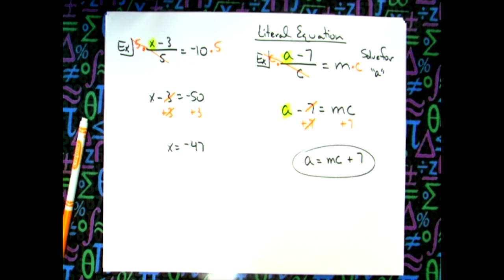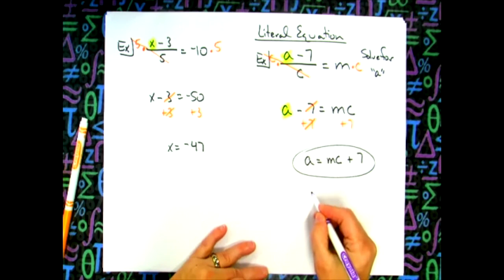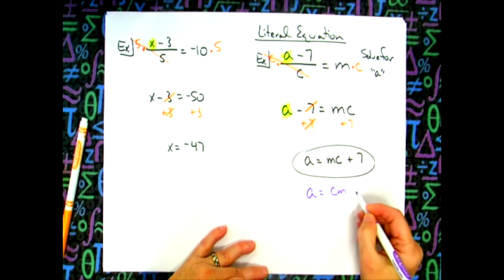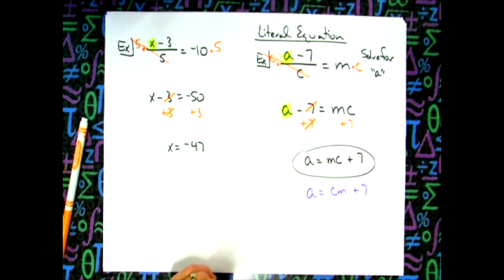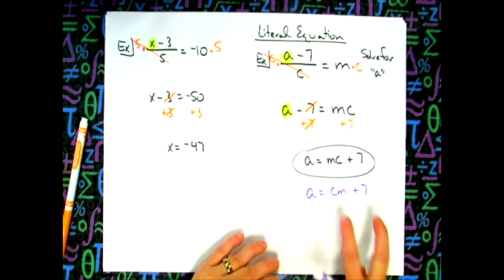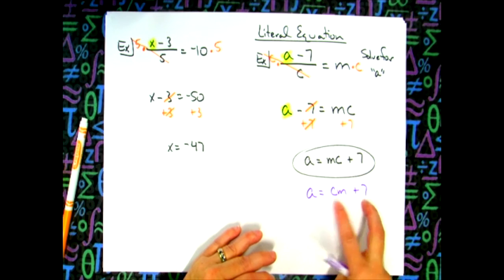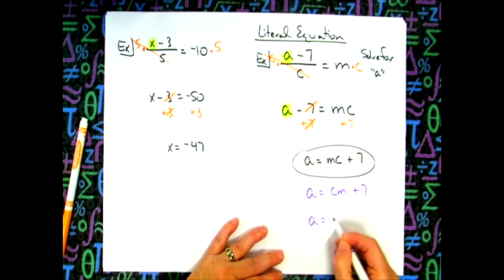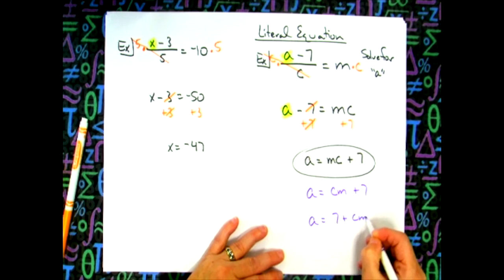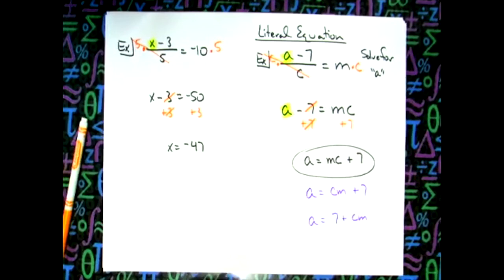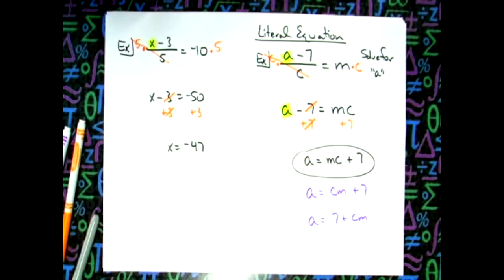You can't do these unless you show your work — write things down. Also note: mc could be written as cm since multiplication order doesn't matter, and the addition could be written as 7 plus mc. There are some variations in what your answer can look like.